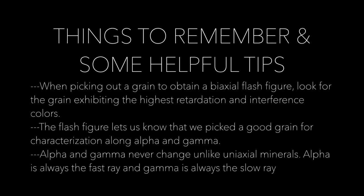Here are some things to remember and some helpful tips. When picking out a grain to obtain a biaxial flash figure, look for the grain exhibiting the highest retardation and interference colors. The flash figure lets us know that we picked a good grain for characterization along alpha and gamma. Alpha and gamma never change, unlike uniaxial minerals. Alpha is always the fast ray and gamma is always the slow ray.